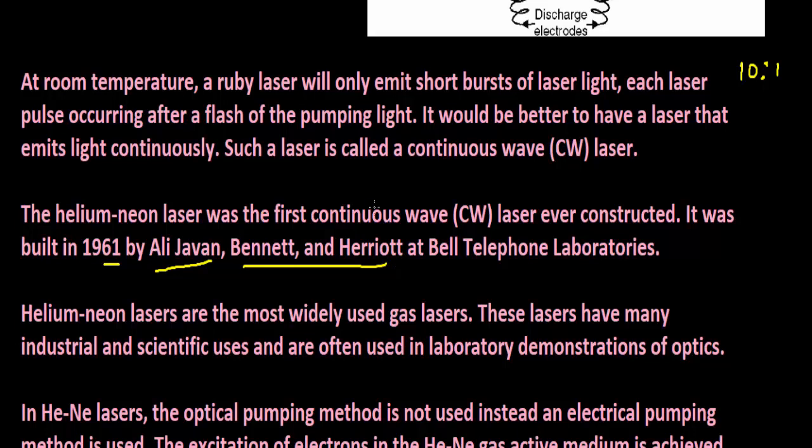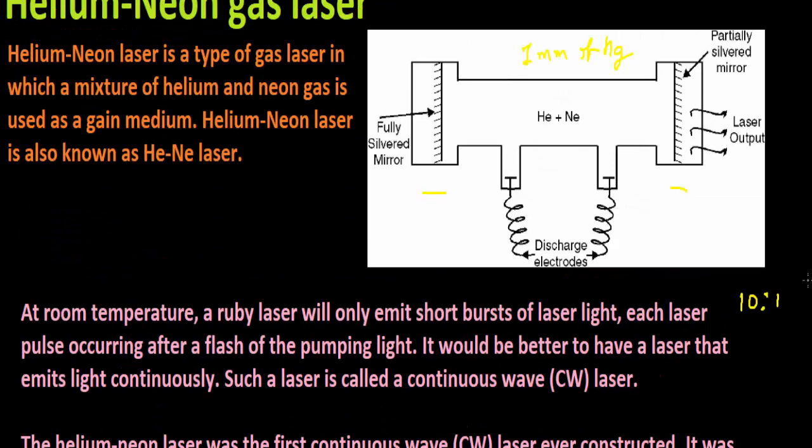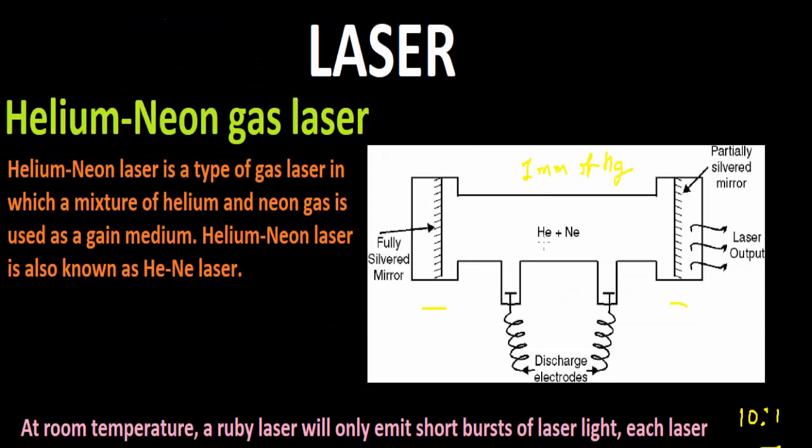It consists of a mixture of helium and neon in the ratio of 10 to 1, and the pressure inside this discharge tube is 1 mm of mercury. The gas system is placed between these two mirror plates.